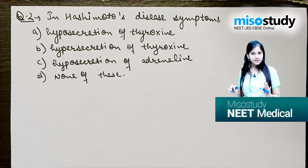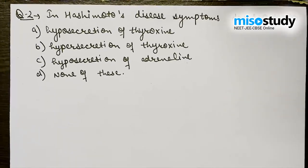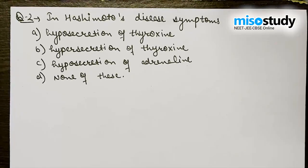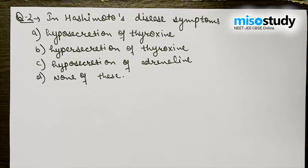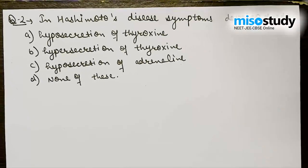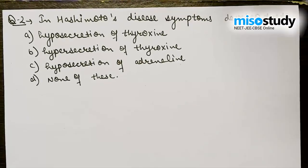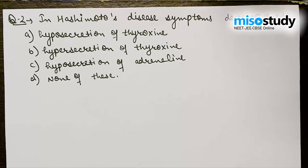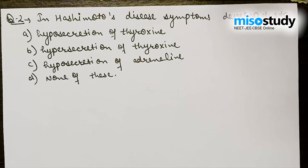The next question: in Hashimoto disease, symptoms develop due to — Option A: hyposecretion of thyroxine, Option B: hypersecretion of thyroxine, Option C: hyposecretion of adrenaline, Option D: none of these.